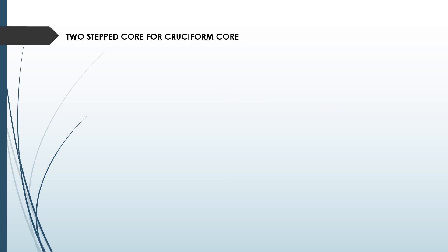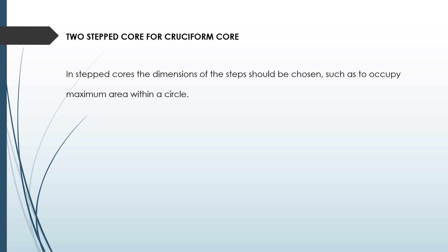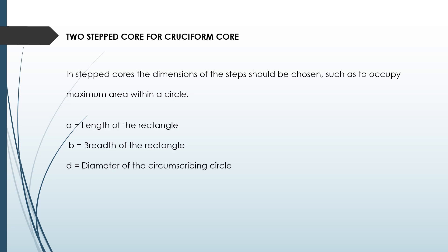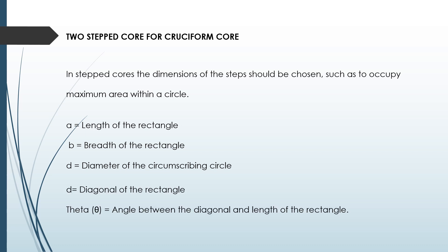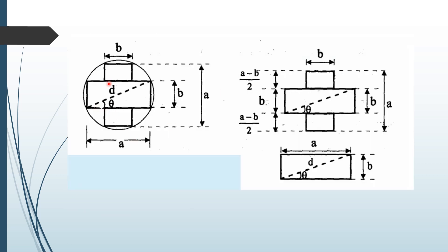The two-step core is also called a cruciform core, where two types of laminations are used to occupy maximum area within the circle. The terminologies used are: a is the length of the rectangle, b is the breadth of the rectangle, and d is the diameter of the circumscribing circle. We need to calculate theta, the angle between a and d. This cruciform core has a horizontal portion and a vertical portion.